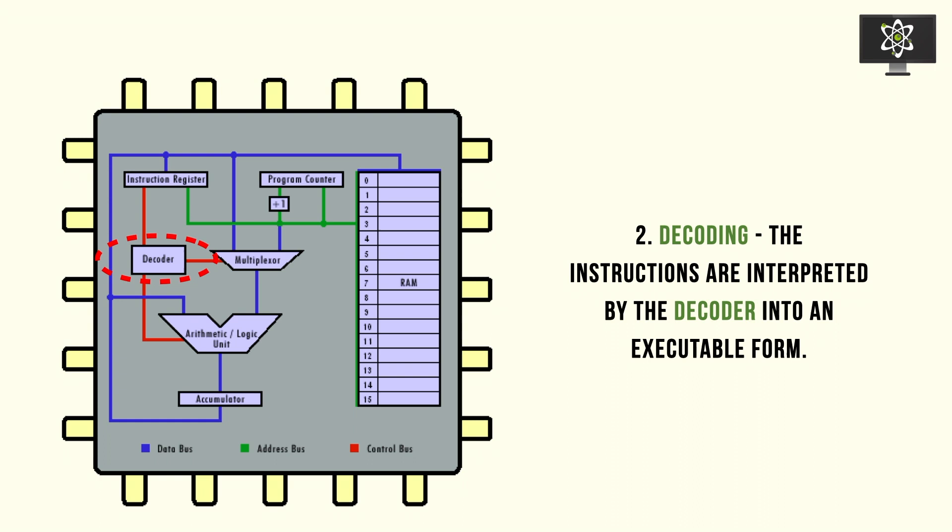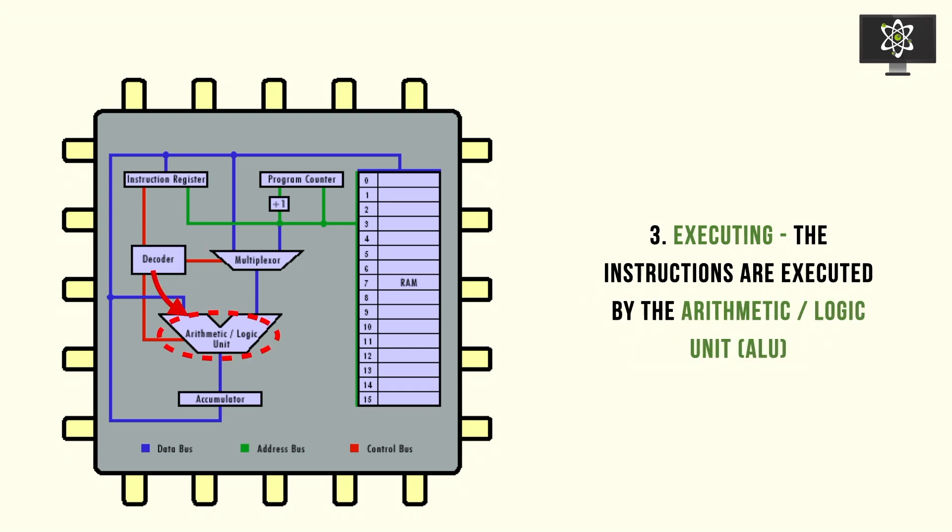Then you've got decoding. This process takes instructions from the instruction register into an interpretable form so that it can be executed by the ALU unit in the CPU. The thing you need to know is that when it comes to executing, the ALU can only process machine code.